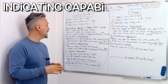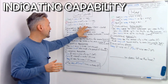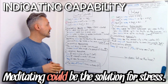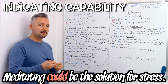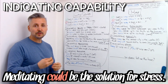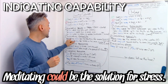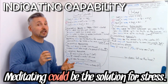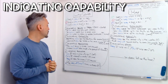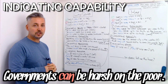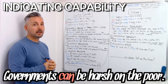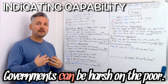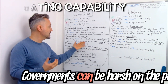The second usage is to indicate capability, which is a little bit different than ability. Meditating could be the solution for stress — here, could gives you a possibility. It's also a conditional sentence: it may not be, but it could be. Another example: governments can be harsh on the poor — this means capable of having an effect on someone, in this case on the poor.